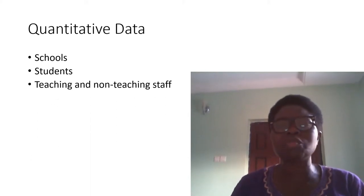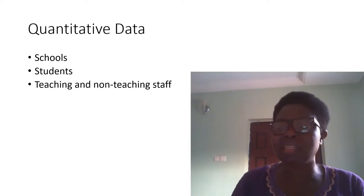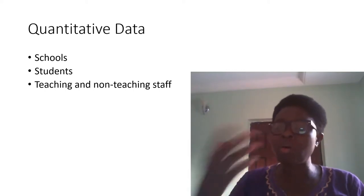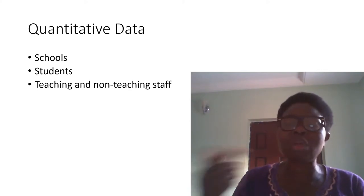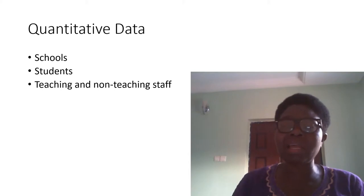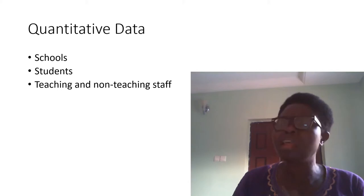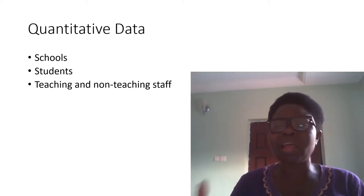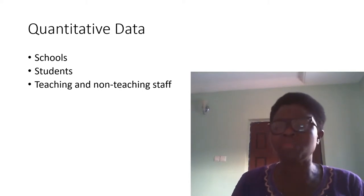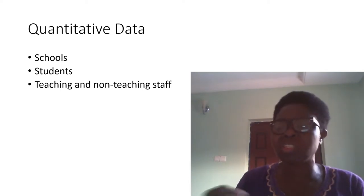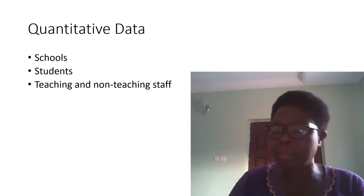The next one is teaching and non-teaching staff — they are vital data required in planning. When you have the student numbers, you need to determine the number of staff required. That is where we talk about the student-teacher ratio: how many academic staff will you need, how many non-teaching staff, even the environmental staff required to keep the environment neat for studies. All this is quantified in numbers.